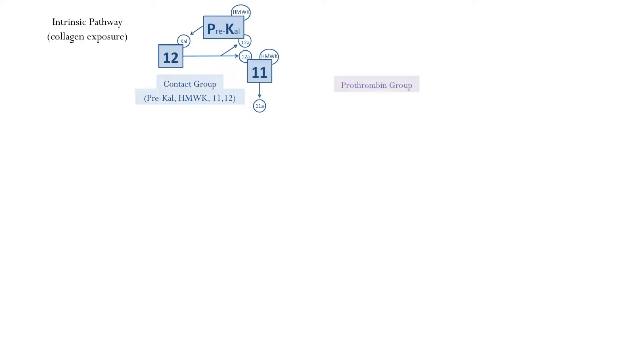The next functional coagulation group after the contact group is the prothrombin group. The prothrombin group includes factors II, VII, IX, and X. Continuing the intrinsic pathway with activated factor XI: factor IX reacts with XIa and becomes activated. IXa then reacts with factor X, and factor X becomes activated, which completes the intrinsic pathway.